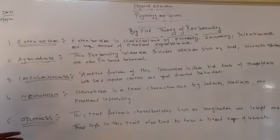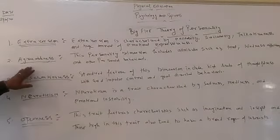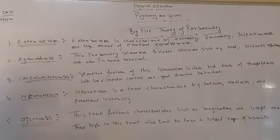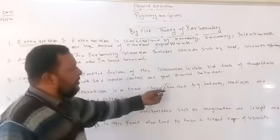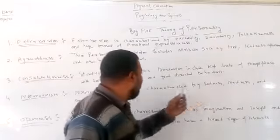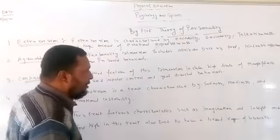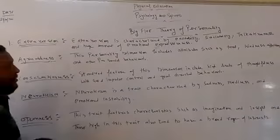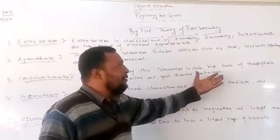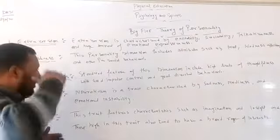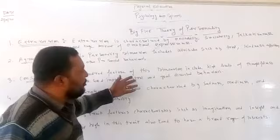Third one is conscientiousness. Standard features of this dimension include high level of thoughtfulness with good impulse control and goal-directed behavior. Conscientiousness dimensions include high level of thoughtfulness, and good impulse control and goal-directed behavior.